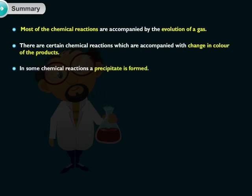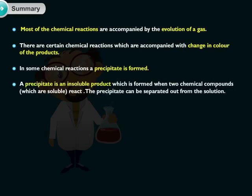In some chemical reactions, a precipitate is formed. A precipitate is an insoluble product which is formed when two chemical compounds which are soluble react. The precipitate can be separated out from the solution.